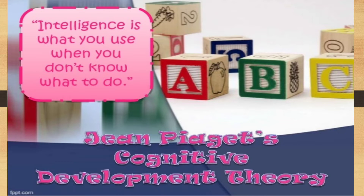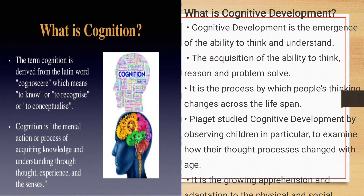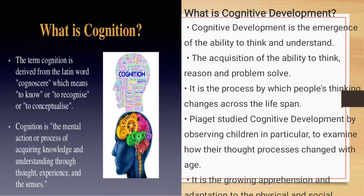So, Cognitive Development. Let us learn some definitions. What is Cognition? Cognition is the ability of an individual to think and act in a purposeful way. The term Cognition is derived from the Latin word 'Cognizor' which means to know or to recognize. It is a mental action — a process of acquiring knowledge and understanding through your experiences, your thought process, and your senses. Cognitive Development is the emergence of the ability to think and understand — the ability to think, reason, and solve various kinds of problems we face in our life.